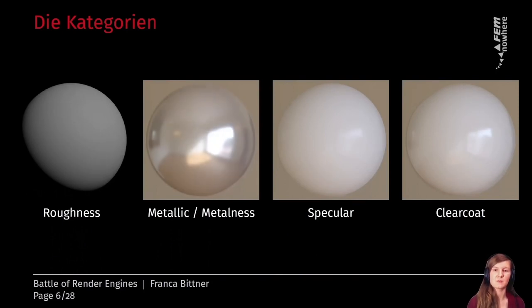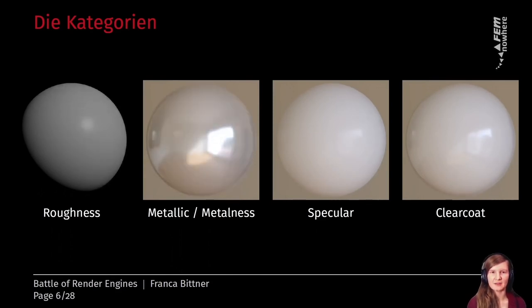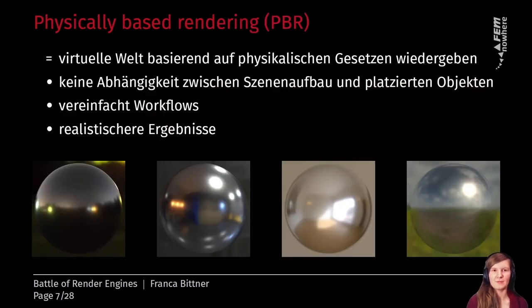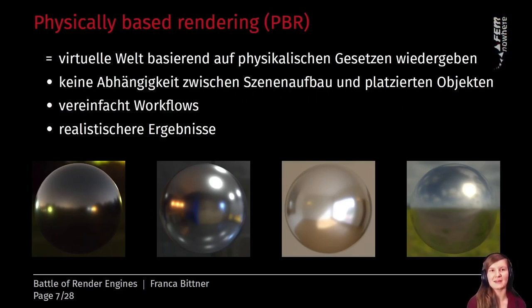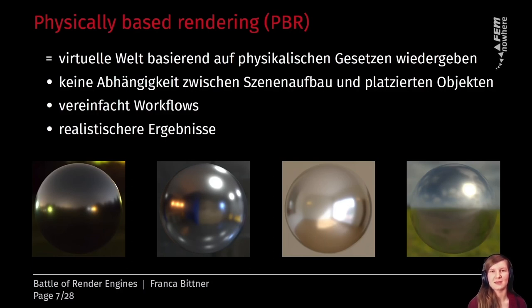The categories in which these renderers compete are roughness, metallic or metalness or specular, as well as clear coat. You can see here the effect of all of those, and I will explain in more detail later what each means. It's about physically based rendering, which means that the real world is emulated in the virtual world with the help of physical laws, and this simplifies the workflow of 3D artists.